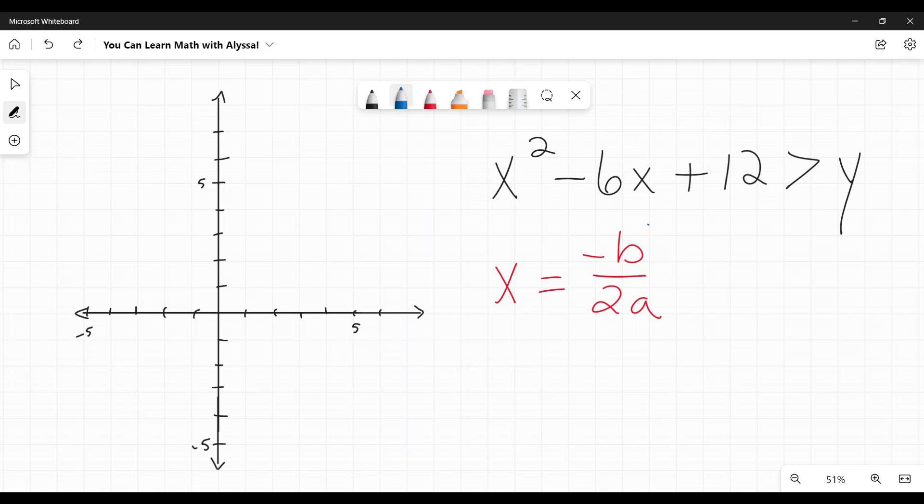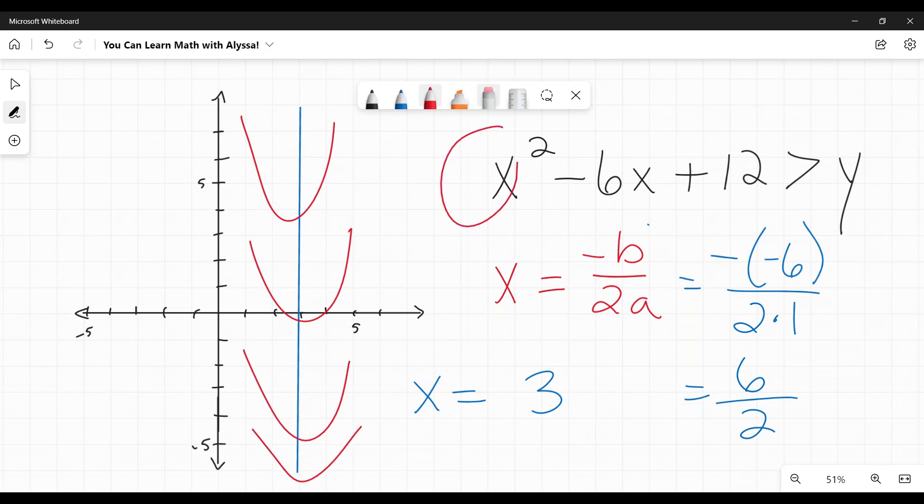So, in this case, our a and our b would be this, our b there is negative 6, and our a is that invisible, and I should say invisible is a better way of saying it, not imaginary, invisible number 1. I'm going to plug those two numbers in. Since our b is negative 6, I plug that in for b, and my a is that invisible or understood 1. So, negative negative 6 on top, that becomes positive. So, positive 6, 2 times 1 is 2. 6 divided by 2 is 3. Now I know my axis of symmetry is x equals 3.